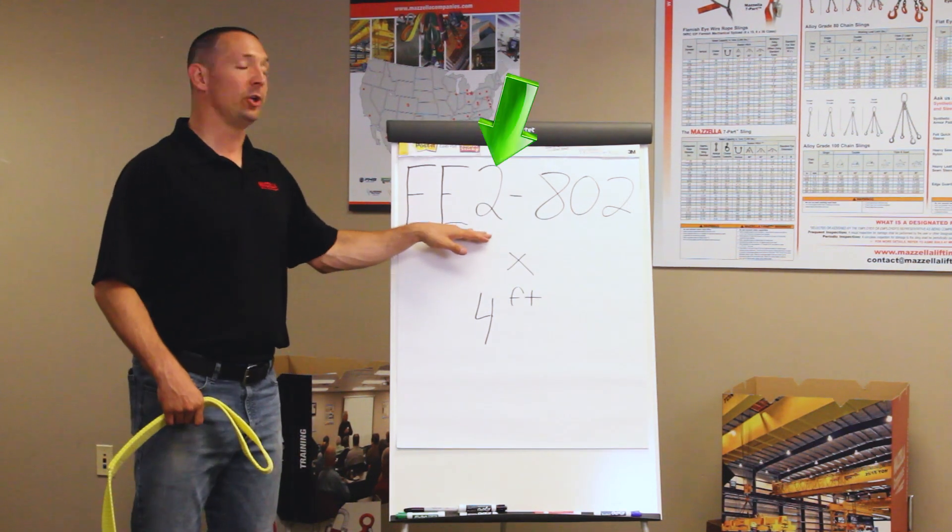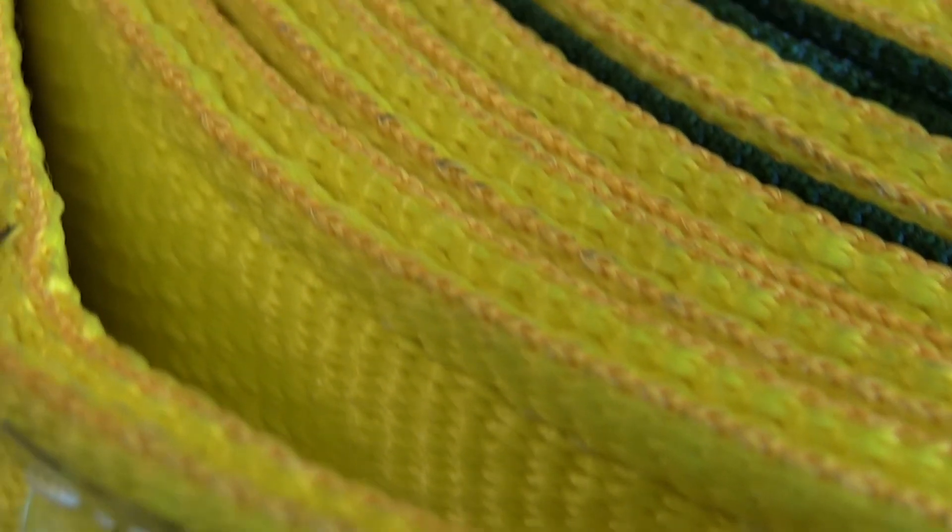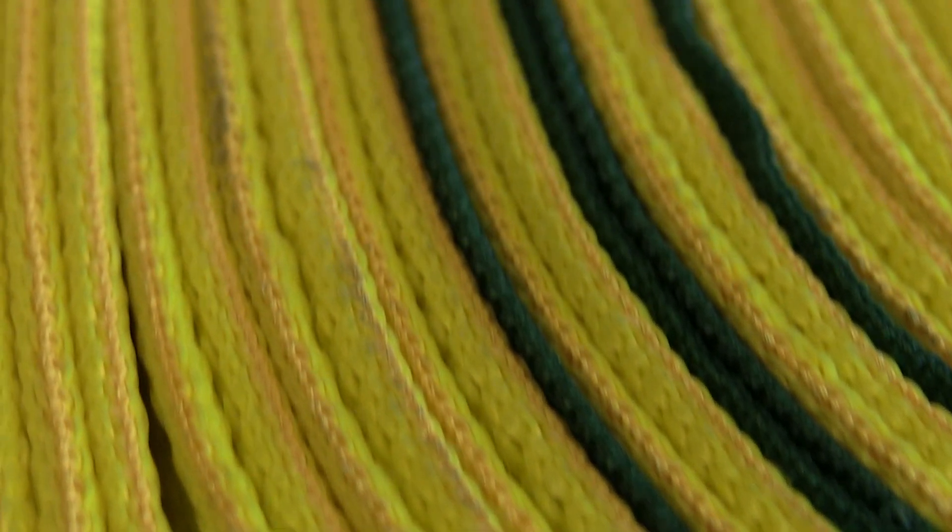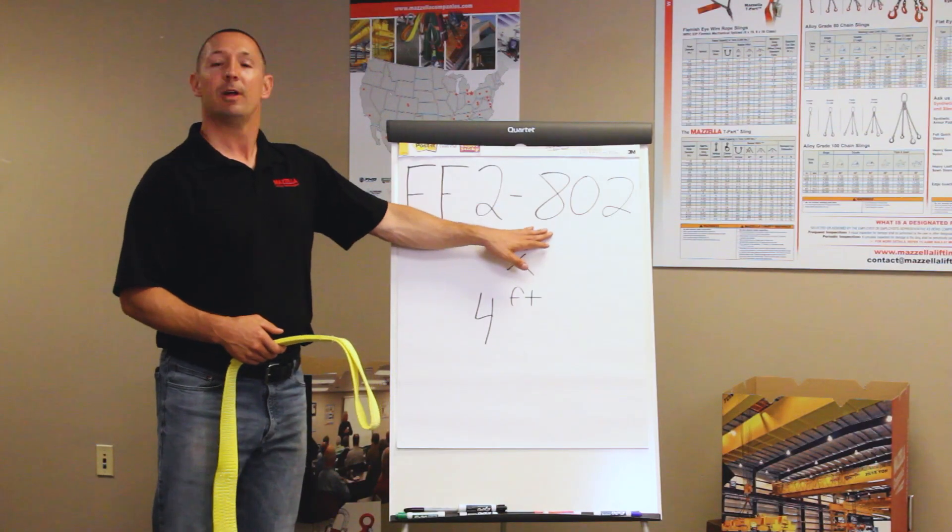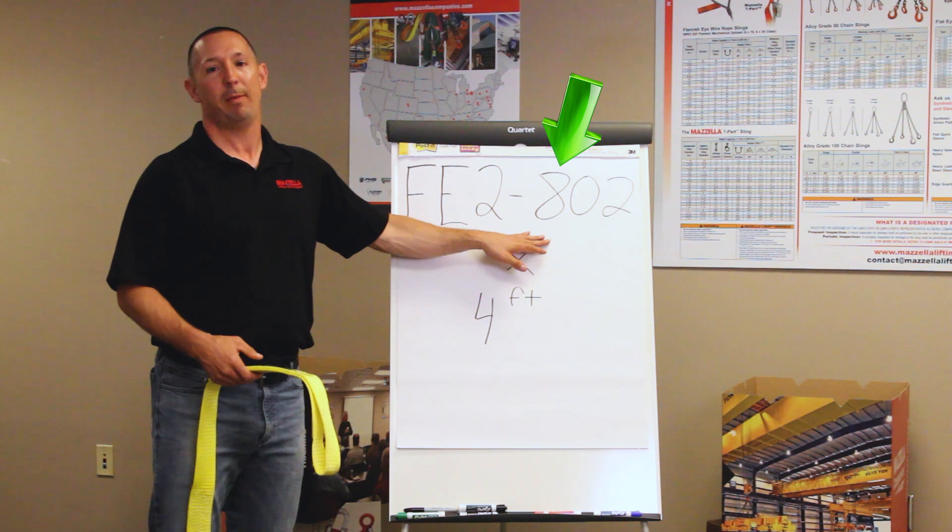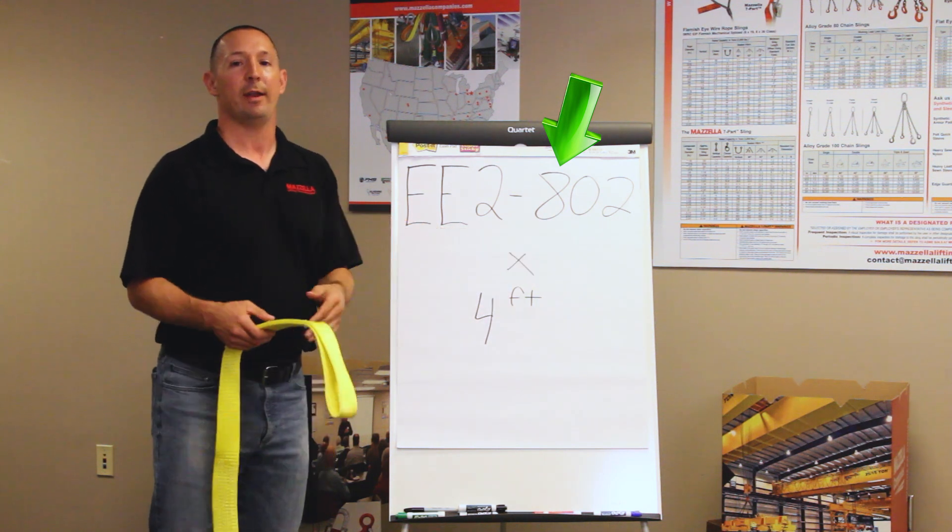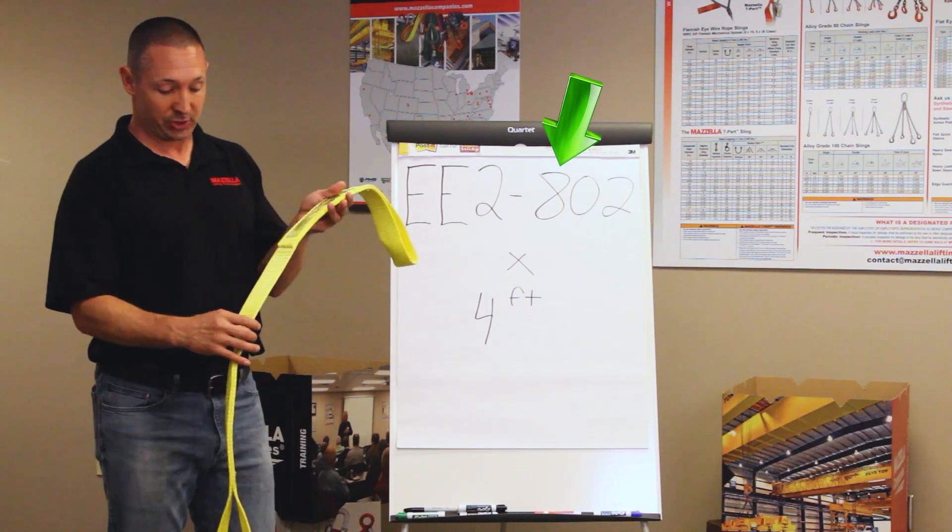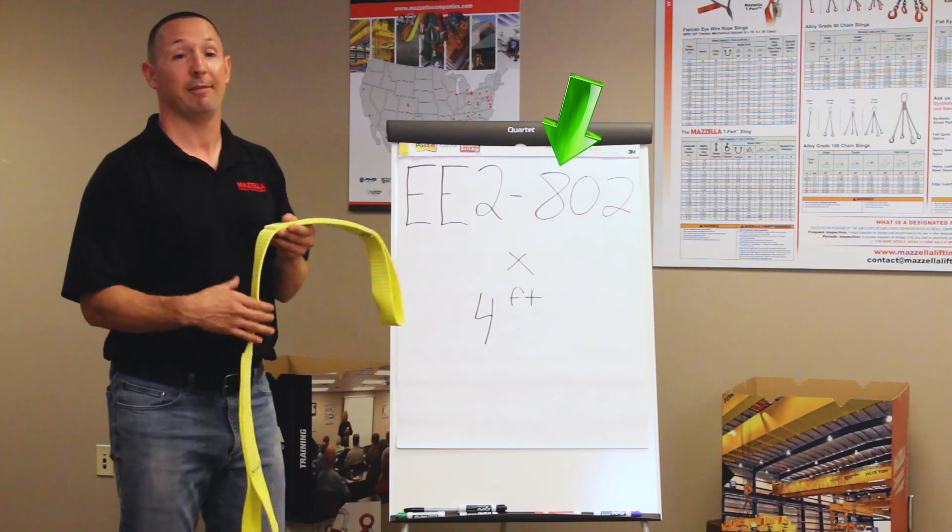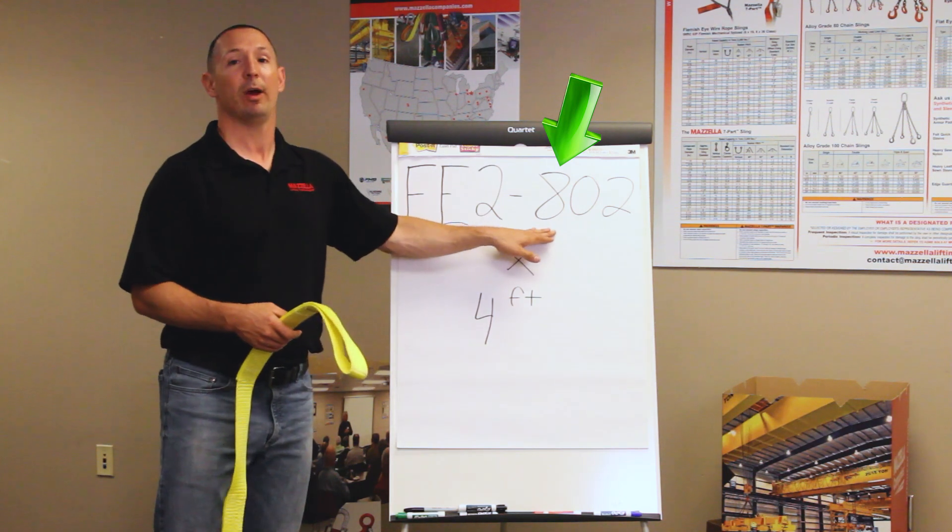The next number right here is going to denote the number of plies that are on the sling or layers. The more layers that may be on there, the stronger the sling might be, up to about four layers. Over here, you've got this number eight and that may vary from manufacturer to manufacturer. But on any flat web sling, you can get edge guard or non-edge guard. This sling right here does not have edge guard. That denotes the number eight right here.